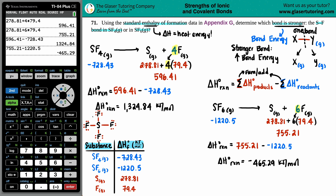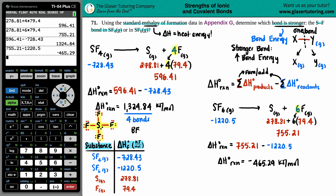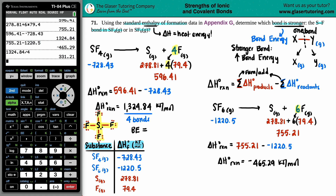Looking at the Lewis structure of SF4 - sulfur in the middle with four fluorines, all single bonds, plus a lone pair on sulfur - how many SF bonds are there? Four: one, two, three, four. Since 1324.84 kJ/mol is the total energy for all four bonds, the individual bond energy = 1324.84 ÷ 4 = 331.2 kJ/mol.